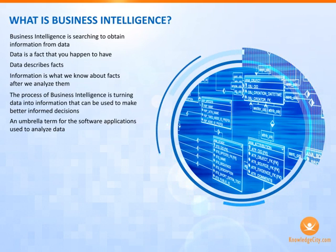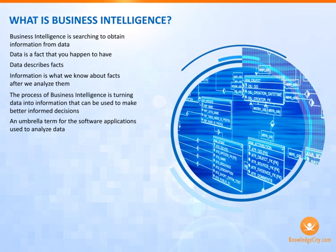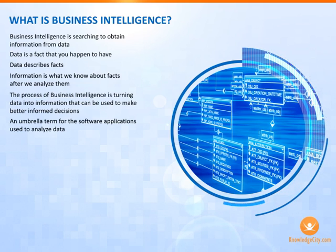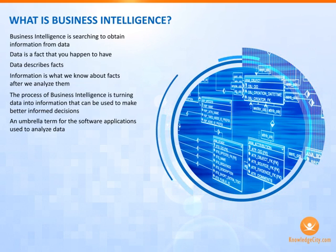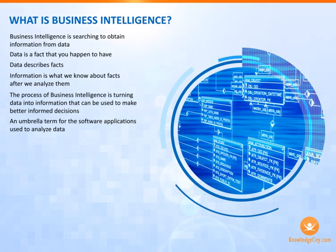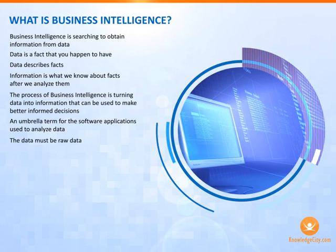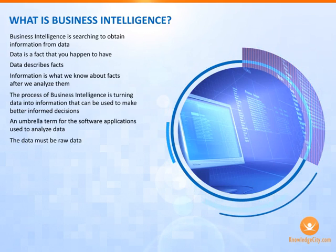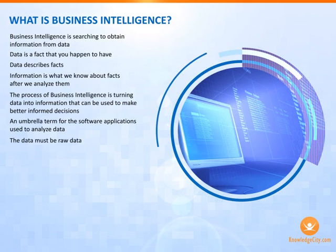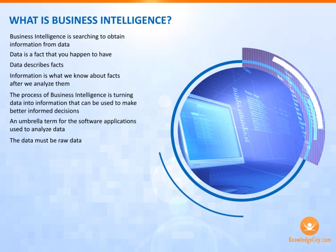Now, there are a few catches that you have to be aware of with business intelligence. Let's get those out of the way now. The first one is a simple fix. Business intelligence software, in most, if not all, of its applications, will only take raw data for analysis. This means that if you try to use data that has already been analyzed before, been run through other software, or that comes from an untrusted secondary source, you will run the risk of analyzing data twice.